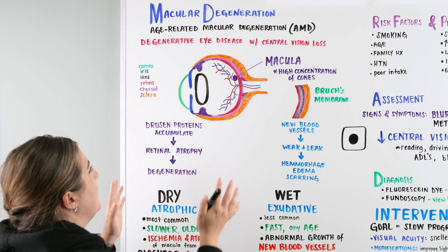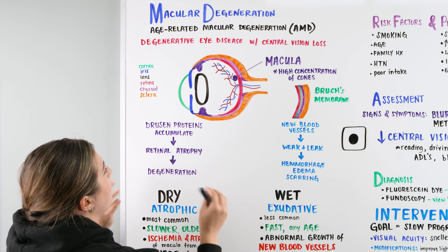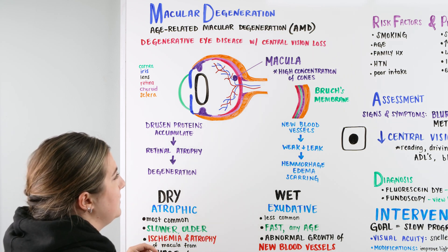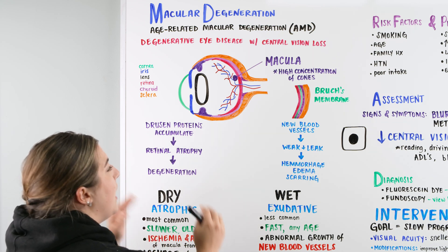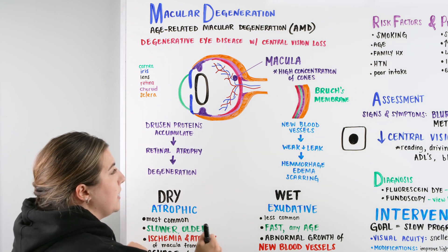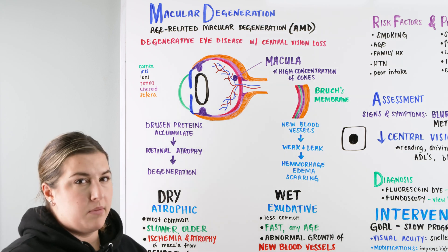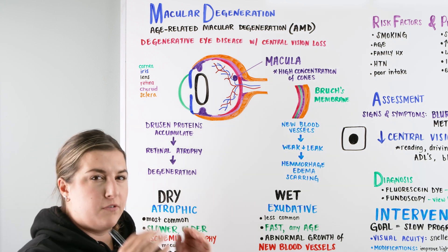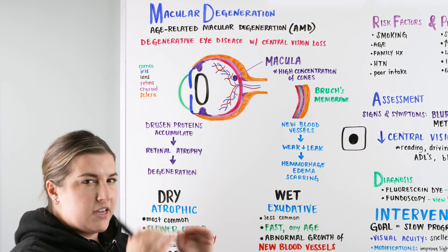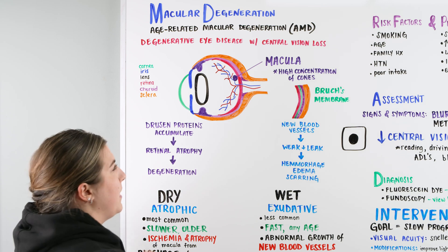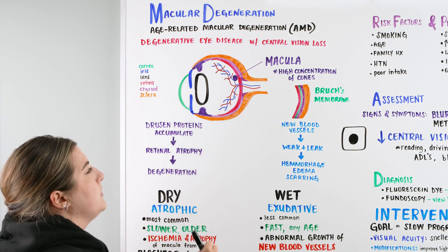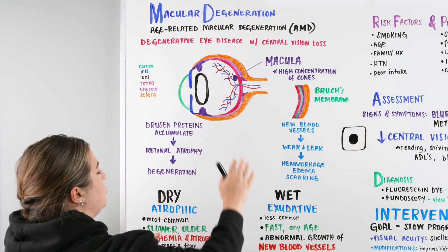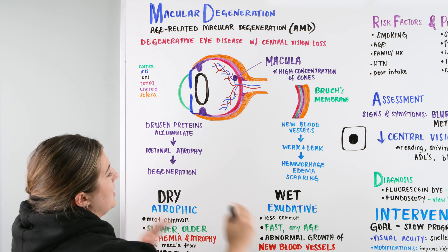When we're talking about macular degeneration, we're specifically talking about the macula degenerating and causing a problem with our central vision. There are two different types: a dry version and a wet version, and there are also different stages within macular degeneration.